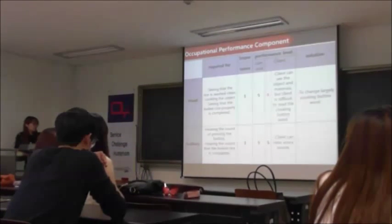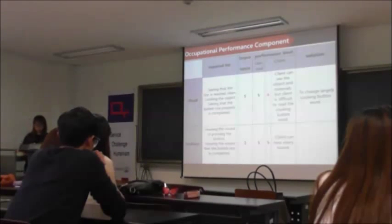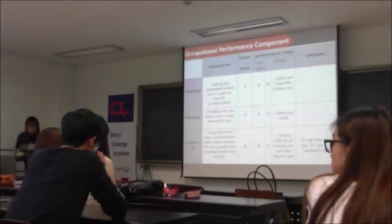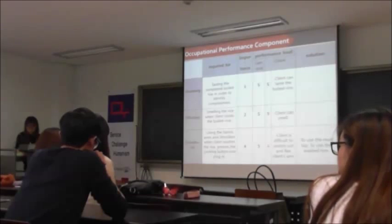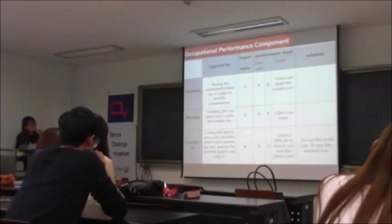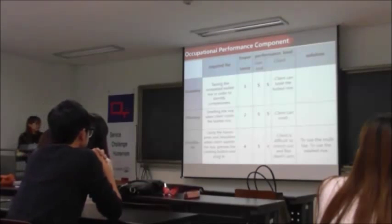Gustatory sense is completely assessed. Importance level is 3, and performance level is 5, so the client has no problem. Gustatory testing is required to identify completeness. Importance level is 3, performance level is 5, because the client can perform the task. Next, olfactory sense is required for smelling when the client cooks. Importance level is 2, performance level is 5, because the client can perform the task.